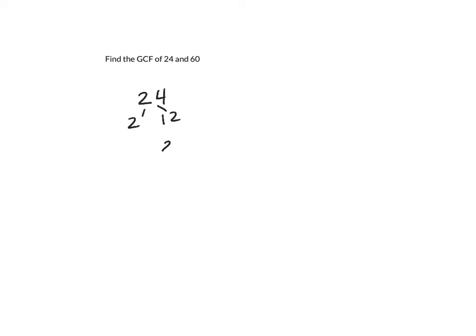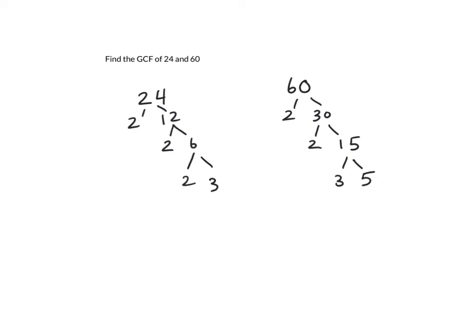Let's do one more example: find the greatest common factor of 24 and 60 using a factor tree. For 24: 2 times 12 is 24, 2 times 6 is 12, and 2 times 3 is 6. For 60: 2 times 30 is 60, 2 times 15 is 30, and 3 times 5 is 15. Highlighting common factors — 3 and 3, and 2 and 2 on each side — the greatest common factor equals 2 times 2 times 3, which equals 12.